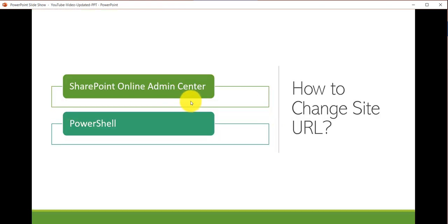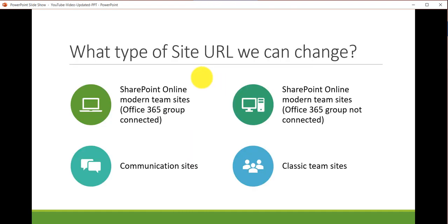There are two ways to do this. One is from the SharePoint Online Admin Center — the out-of-box way — and the other is using the SharePoint Online Management Shell or PowerShell to change it. I will show you both methods here.